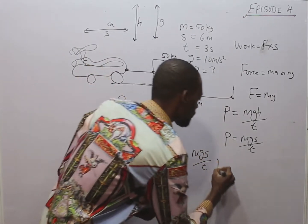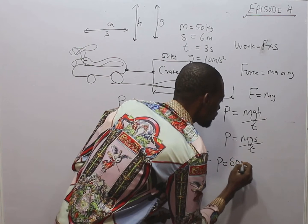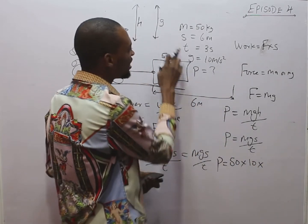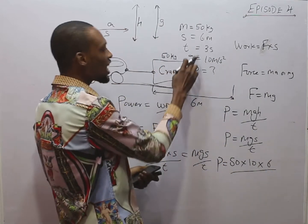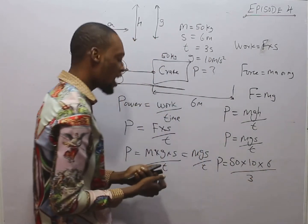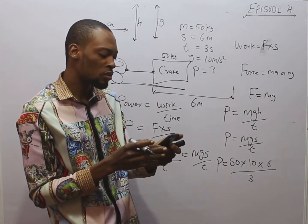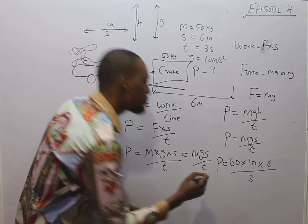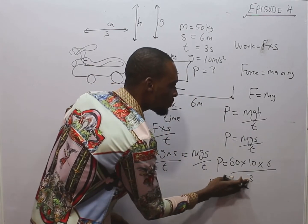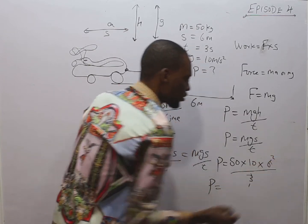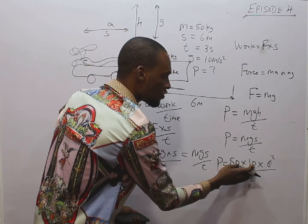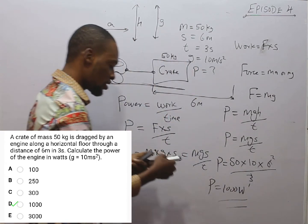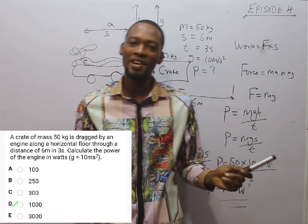Now that we have our formula, we substitute: mass = 50 kg, g = 10 m/s², distance s = 6 m, time t = 3 seconds. So P = 50 × 10 × 6 ÷ 3. Simplifying: 6 ÷ 3 = 2, then 50 × 10 = 500, and 500 × 2 = 1000. The power of the engine is 1000 watts.